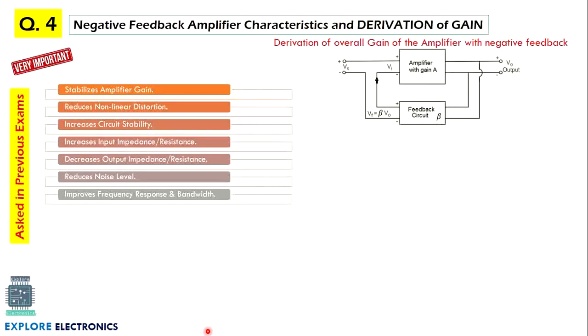Next one is negative feedback amplifier characteristics and derivation of gain. The two feedback methods: one is negative feedback, another one is positive feedback. This negative feedback method is used in amplifier circuits and positive feedback used in oscillator circuits. These are all the advantages of negative feedback.